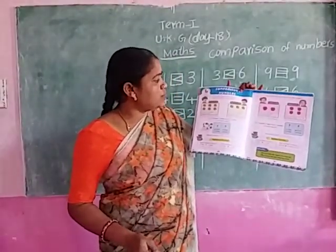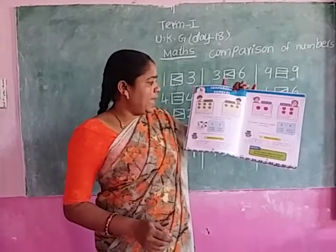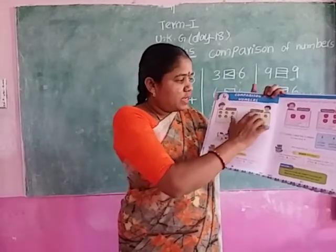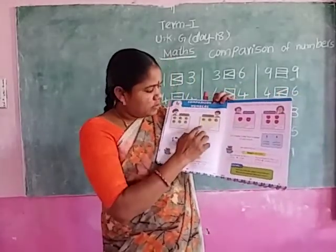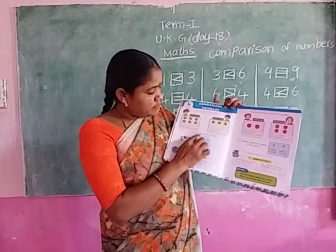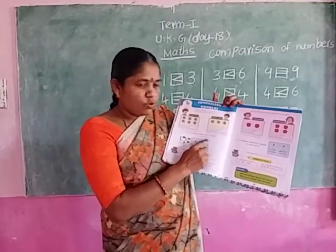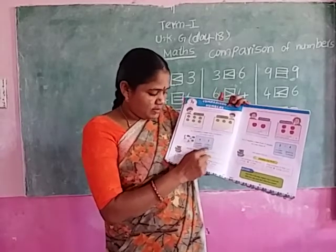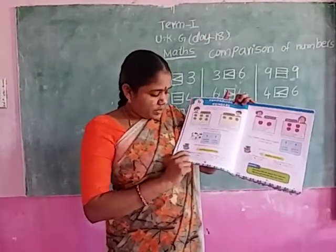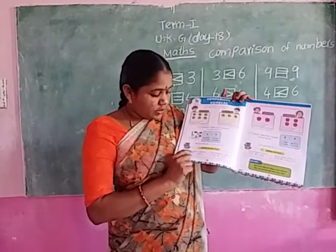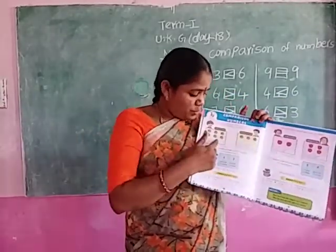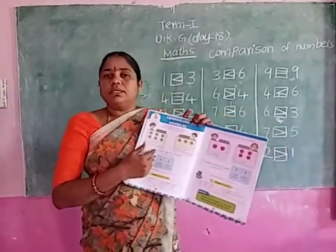Comparison of numbers. Vicky and Raju have each brought a box of marbles to play with. Vicky has — how many marbles are there here? 1, 2, 3, 4, 5, 6 — six. Raju's box — how many marbles are there? 1, 2, 3 — three. So, 6 marbles more than 3 marbles. 6 is more than 3. 6 is the greater number, 3 is the smaller number. We read this: 6 is greater than 3. Here is more balls, here less. So 6 is the greater number.